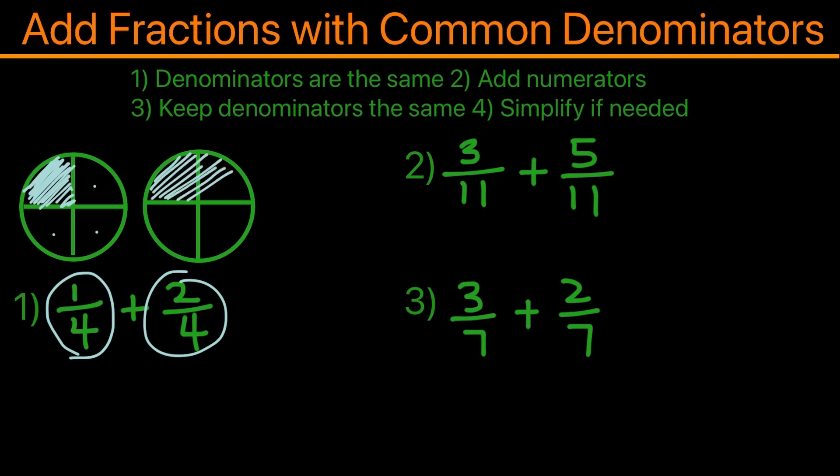For demonstration purposes, when you have 1/4 plus 2/4, you're basically just adding the 1 and 2 together, and it becomes 3/4. So what we did there was: first, we have the denominators being the same, 4 and 4. And the second part is simply adding the numerators of 1 and 2, which gives us 3.